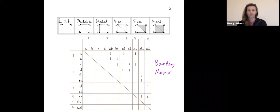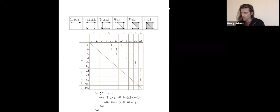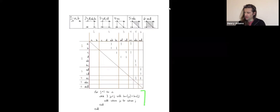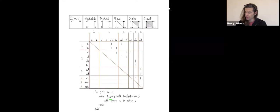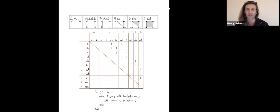The persistent homology algorithm proceeds by reducing this matrix. Here's the algorithm: you iterate through columns one up to N. For the current column J, while there exists an earlier column whose lowest one is in the same row as the current column's lowest one, you add that earlier column to the current column. Once done, you'll have the reduced boundary matrix from which you can read off the persistent homology bars.